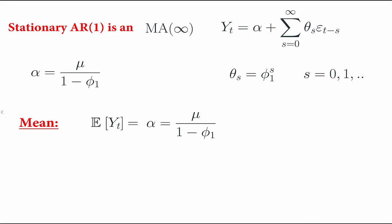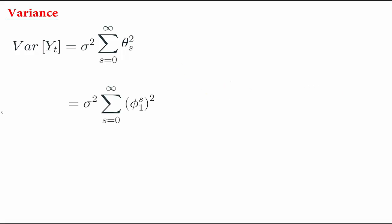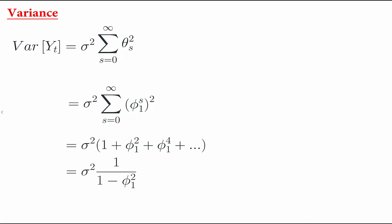We can first start with the mean. The mean of an MA infinity is just alpha, and in this case alpha is mu/(1 − φ1), so we have the mean of an AR1. For the variance, we use the general MA infinity formula and plug in theta_s = φ1^s. We get φ1^(2s) summed over s, which is a geometric progression in φ1², giving 1/(1 − φ1²) under |φ1| < 1. Multiplied by σ², this is the variance of the AR1.